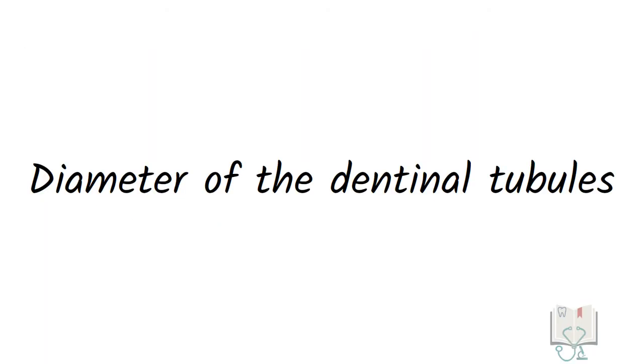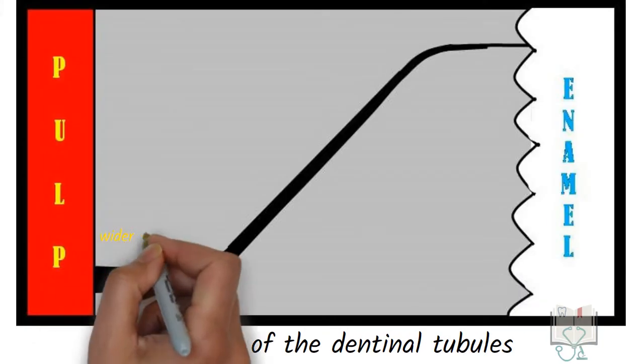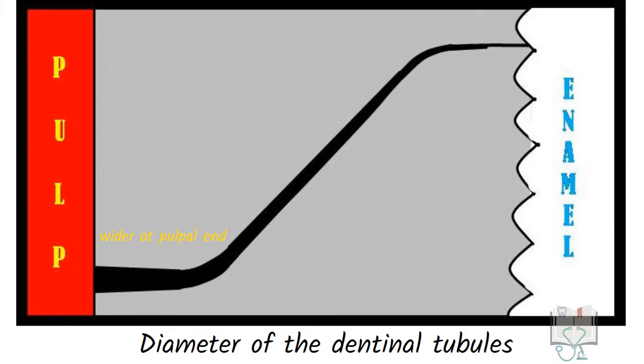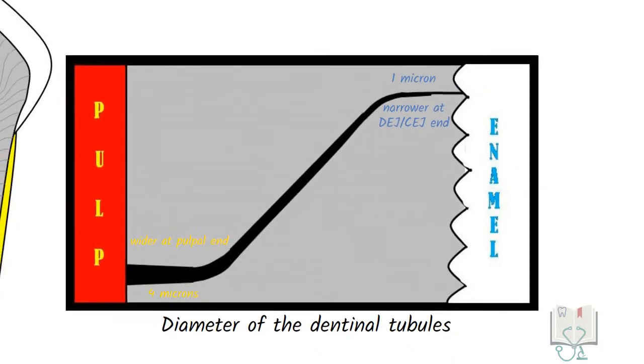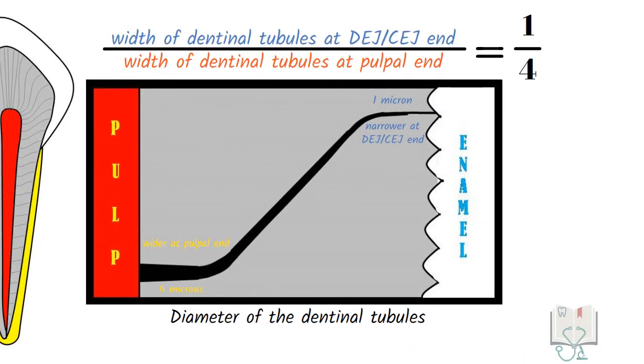The diameter of dental tubules is not constant. They are wider at the pulpal end about 4 microns and narrower at the external end about 1 micron, giving it a ratio of about 1 is to 4.